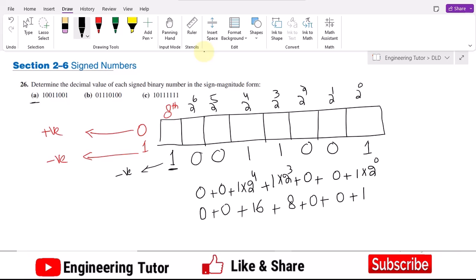So how much would it be? That is 16 plus 8 is 24 plus 1 is 25. So this is now 25 while this one is 1. So therefore the equivalent will be minus 25 in decimal numbers.